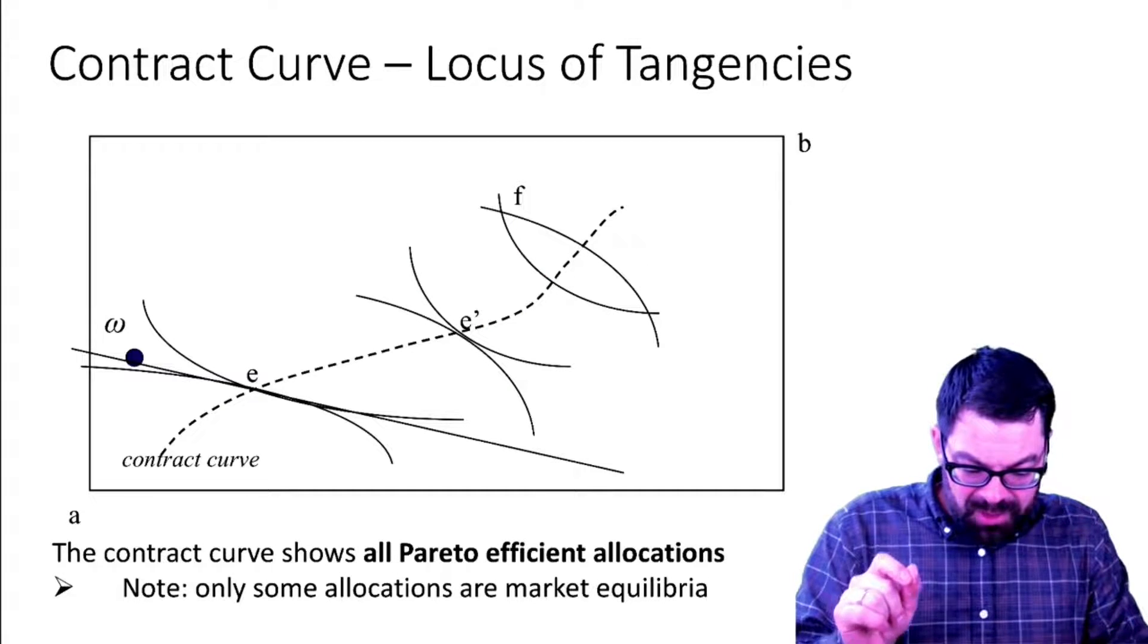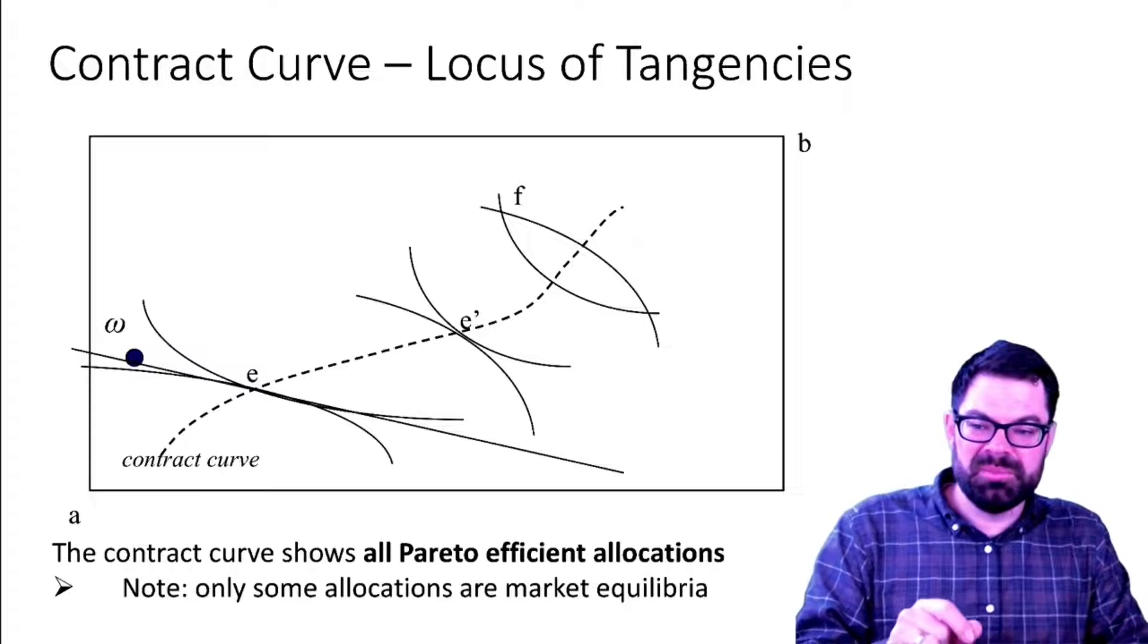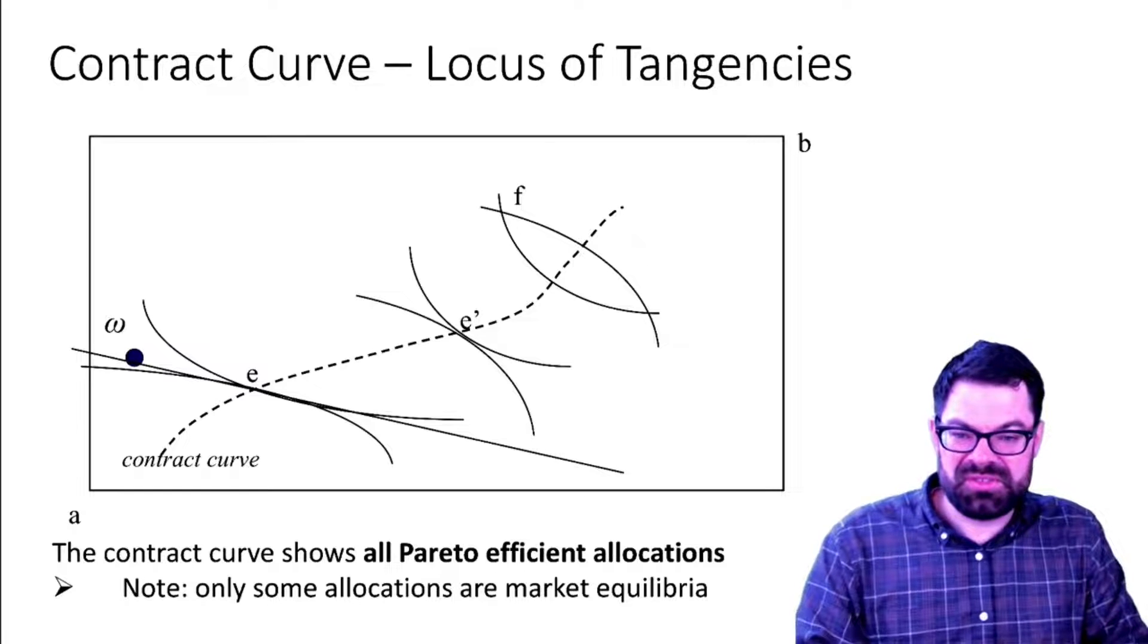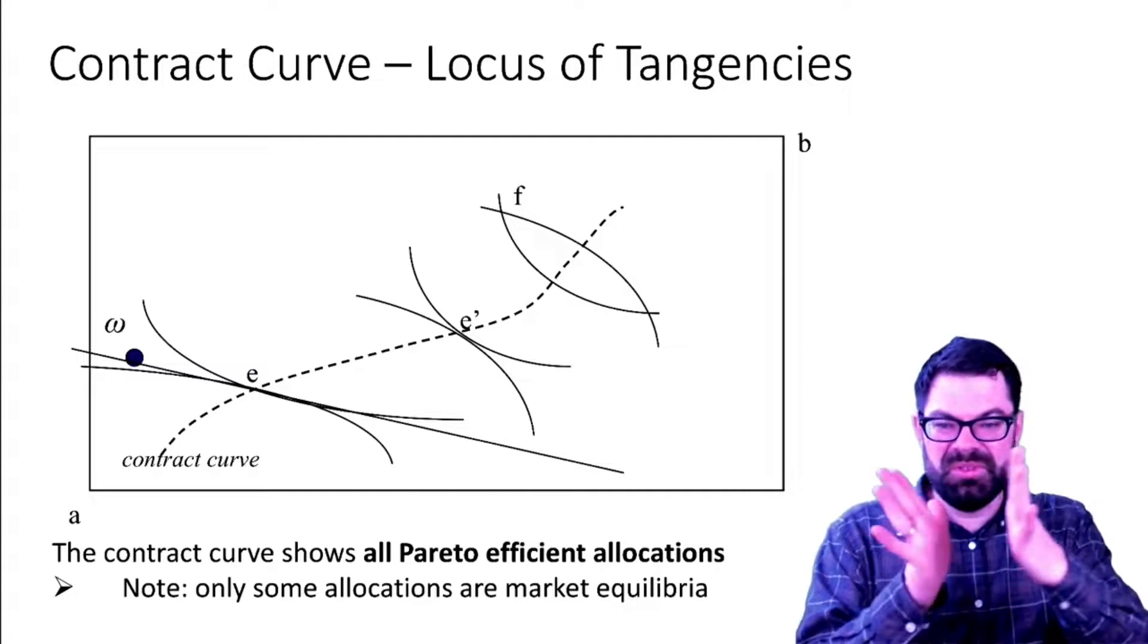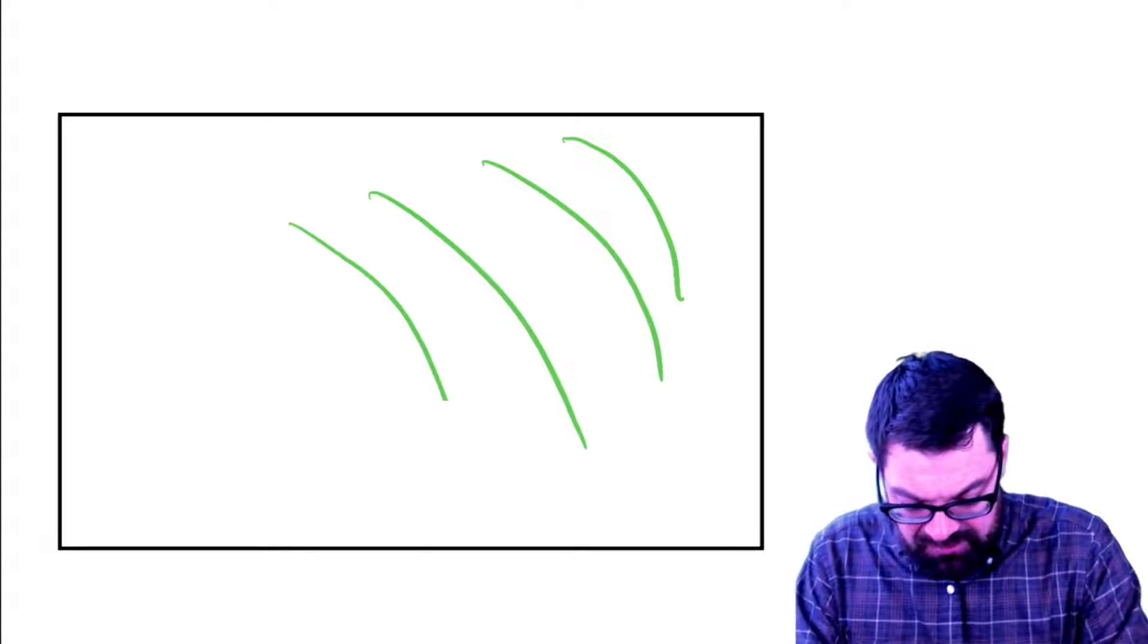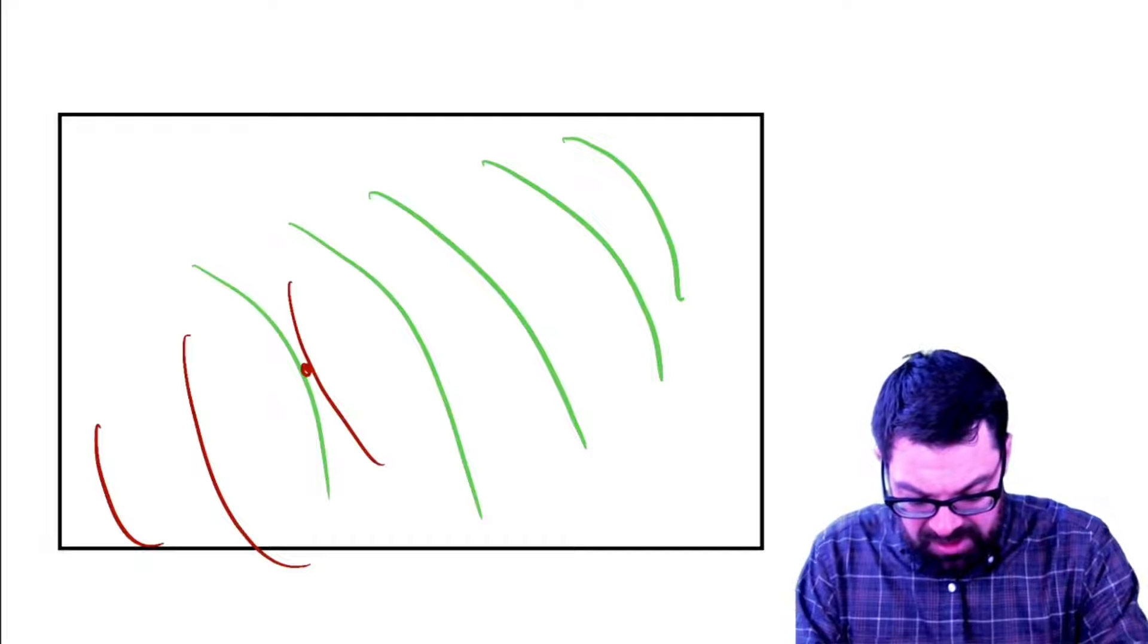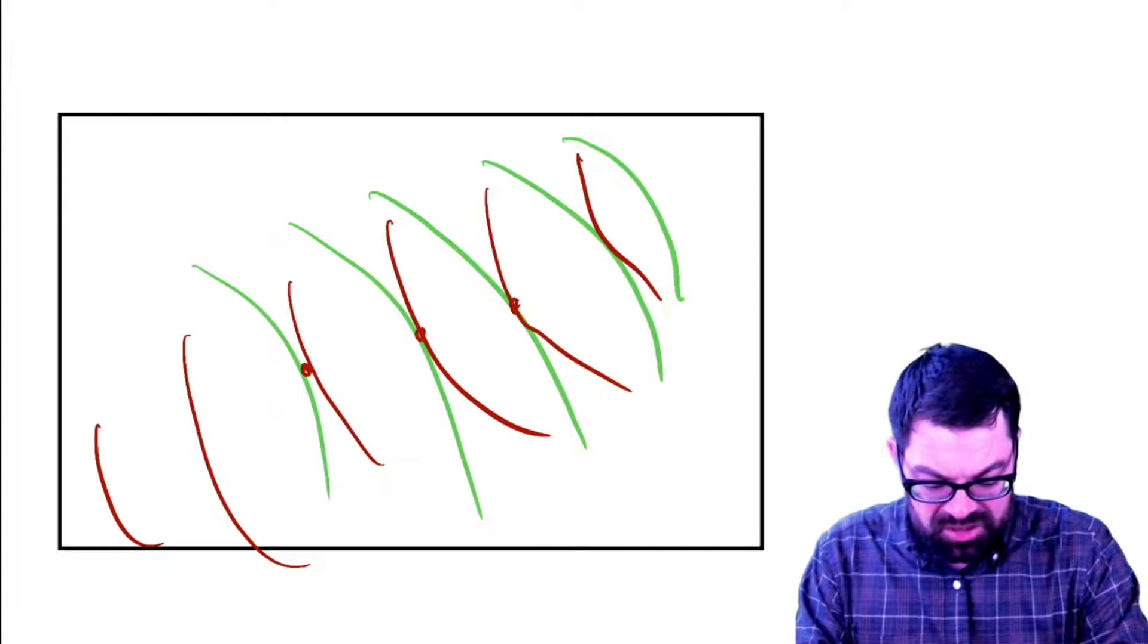But what you should also realize is that depending on the endowment points, there are many possible Pareto optimal or Pareto efficient allocations. And the locus of all those points where those two indifference curves are tangential to one another is called the contract curve. So when you think about this again, from the perspective of Betty,